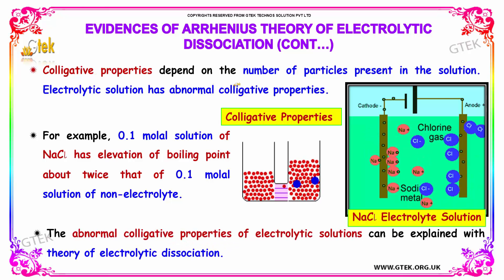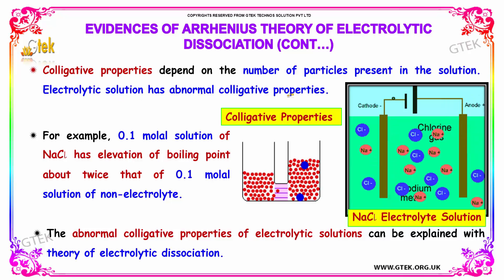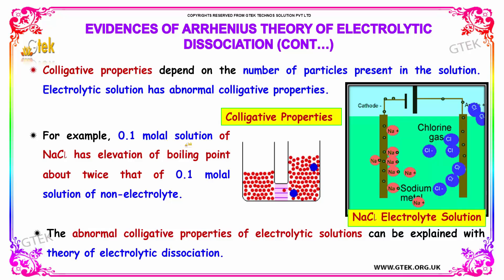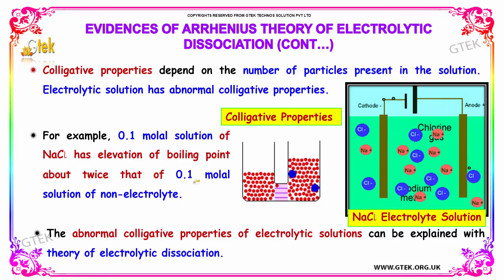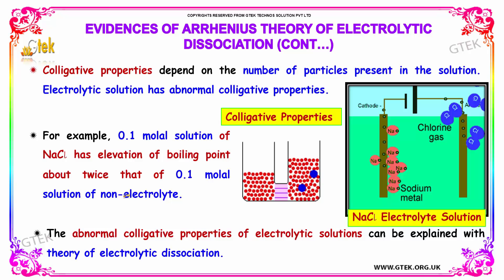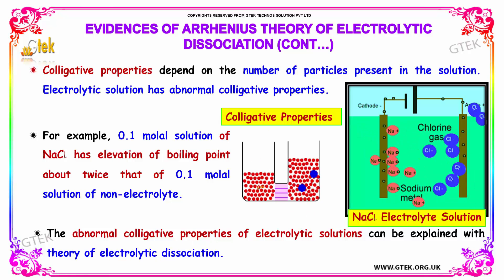Colligative properties depend on the number of particles present in the solution, and electrolytic solutions have abnormal colligative properties. For example, a 0.1 molal solution of sodium chloride has an elevation of boiling point about twice that of a 0.1 molal solution of non-electrolytes. The abnormal colligative properties of electrolytic solutions can be explained with the theory of electrolytic dissociation.